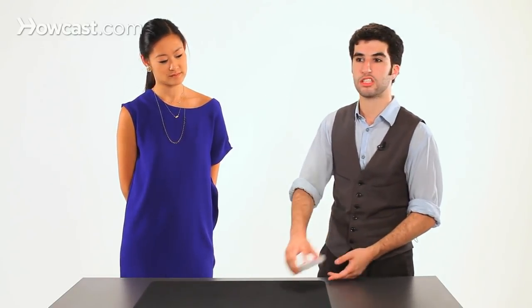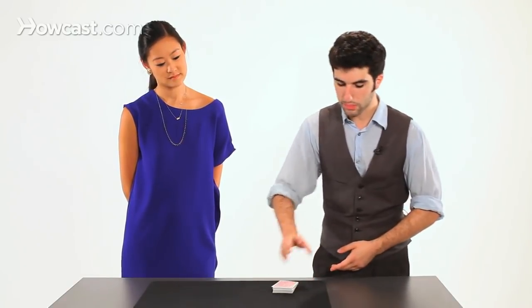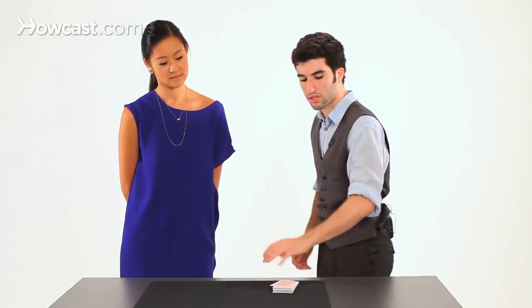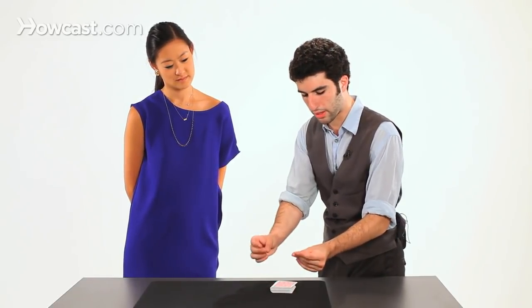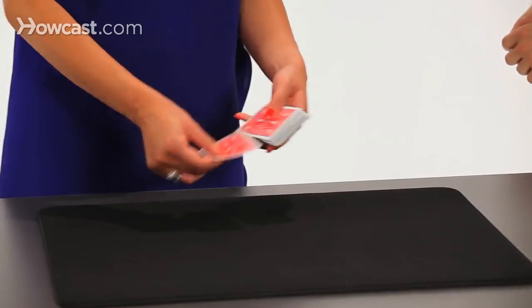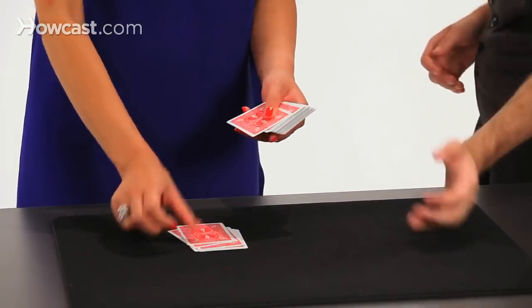So now all I have to do is justify her spelling out the card. And I do that just by reminding her, well, of course I'm not going to be able to find your card. It's your card. It's bound to you. So why don't you try? We'll use a little bit of magic, right? And all I want you to do is spell out your card. S-I-X-C-L-U-B-S.